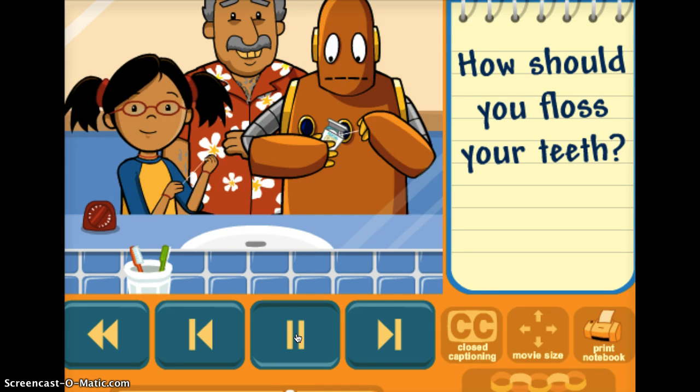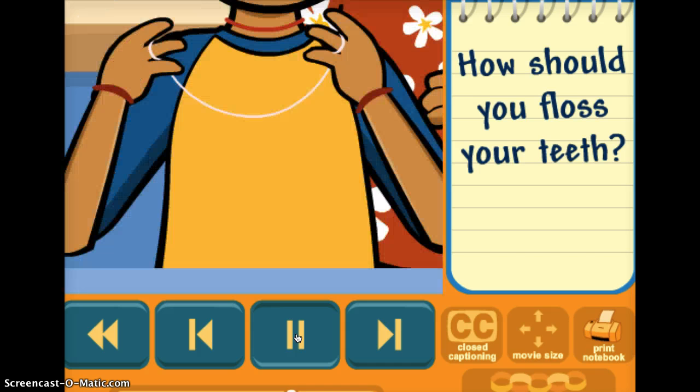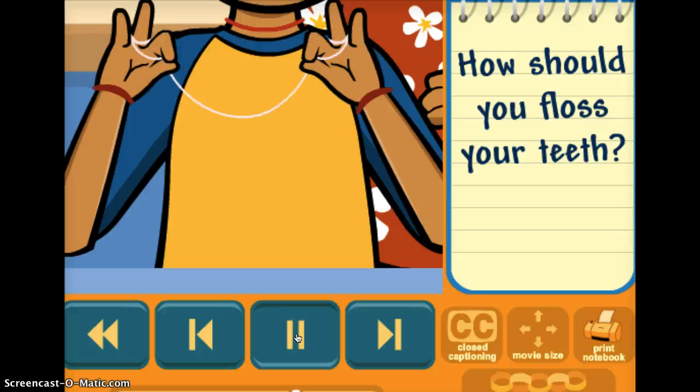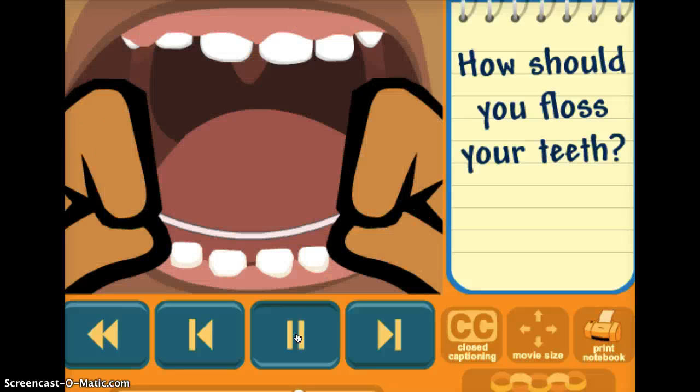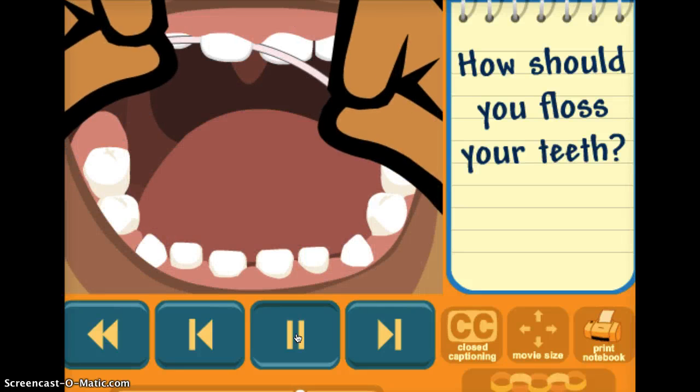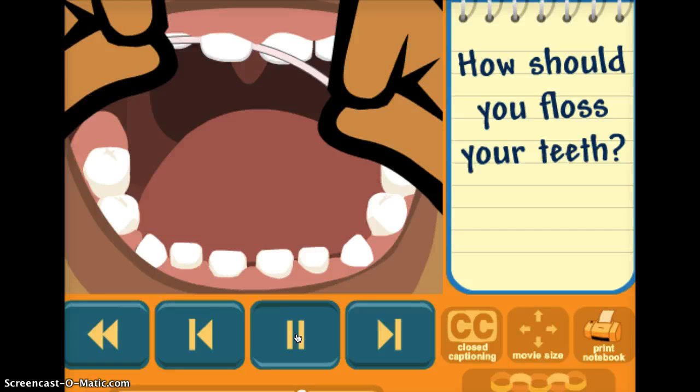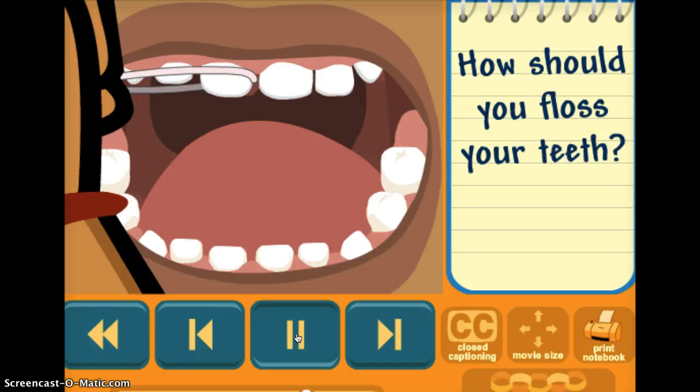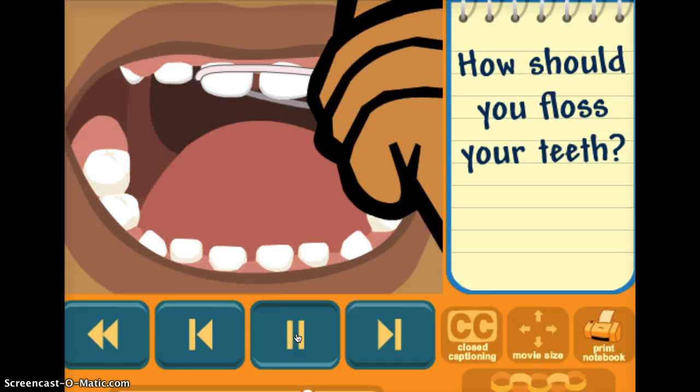Hold a piece of floss between your fingers. Wrap the ends around your middle fingers, and use your thumbs and index fingers to guide the floss between your teeth. Slowly move it back and forth as you slide it between your teeth. Curve the floss around your tooth, and gently move it up and down between your teeth and gums.